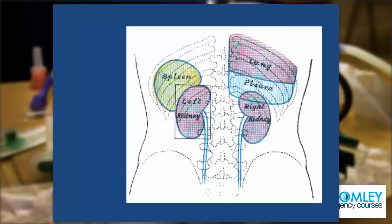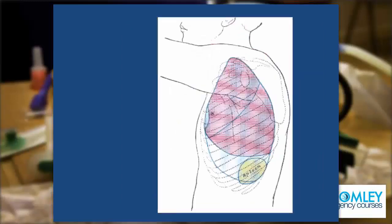If we look from the back, on the right side we can see how the lung comes down to just the beginning of the 11th rib posteriorly, but that will vary with respiration. The pleural cavity, however, comes down to the 12th rib. On the left side we can see the spleen there between the 9th and 11th ribs, and we can see how the tops of the kidneys are just hidden behind the ribs.